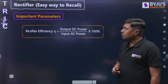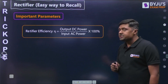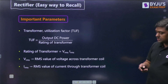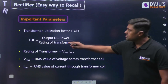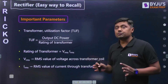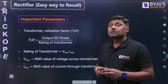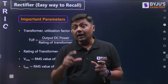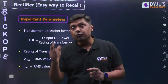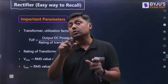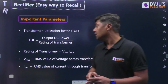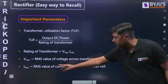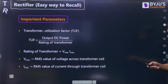The transformer utilization factor, TUF, is given as output DC power divided by the rating of the transformer. The transformer rating is the product of VRMS and IRMS — that is, the RMS voltage across the transformer coil multiplied by the RMS current through the transformer coil.